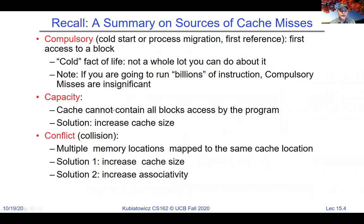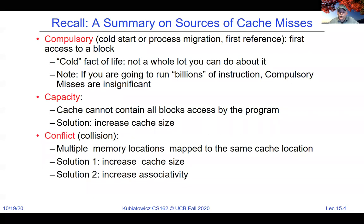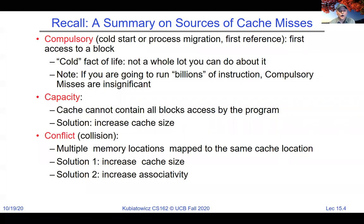A capacity miss occurs because the cache is just not big enough. You put your data in, get fast access for a while, then put too many other things in and kick something out. When you miss again, that's a capacity miss. A conflict miss is different — it's not that the cache was too small, but that the slots you're allowed to use were too few. You put something in, then a couple of other things mapped to the same slot kicked it out, and when you miss again, that's a conflict miss.